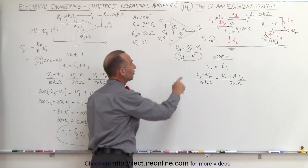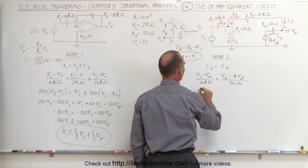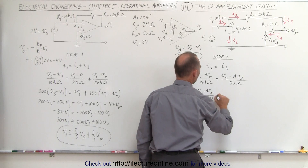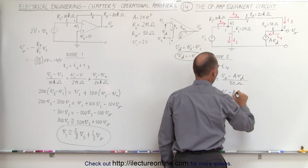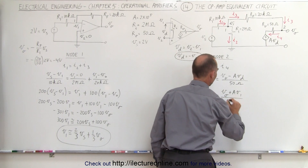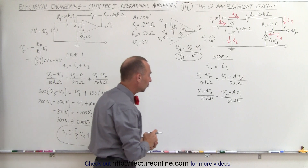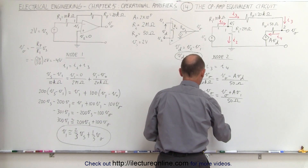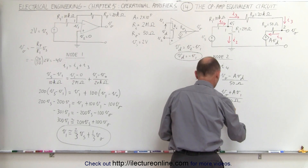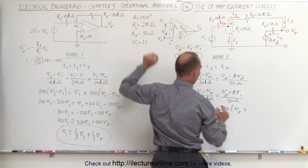Since V_D equals minus V_1, we replace V_D with minus V_1. The node 2 equation becomes: (V_1 minus V_O) / 20k = (V_O + A·V_1) / 50. Multiplying both sides by 20k, with 20k/50 = 400, and A = 200,000: V_1 minus V_O = 400V_O + 200,000 × 400 × V_1... wait — 400 times A·V_1 gives 400·V_O + 80,000,000·V_1.